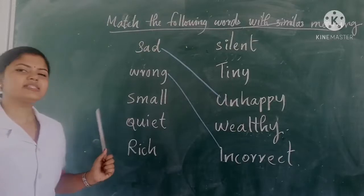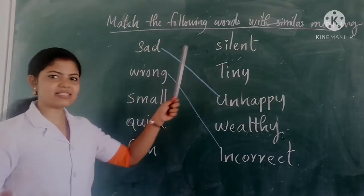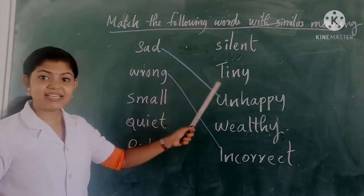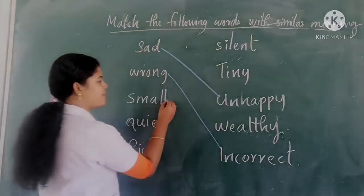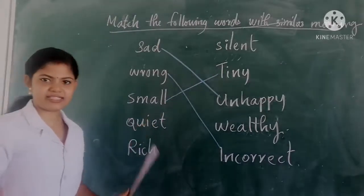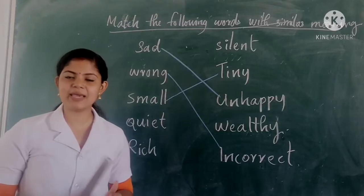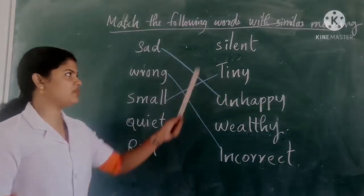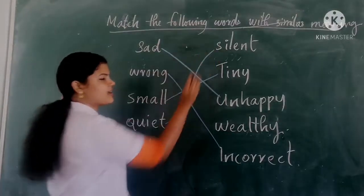Next word is small. Is there any word related to this word? Tiny. Tiny means small, so we can match them together. Next word is quiet. In the classroom, teacher says keep quiet, which means keep silence. So you can easily connect these two words — both have similar meaning.